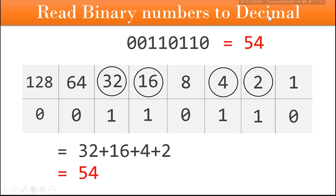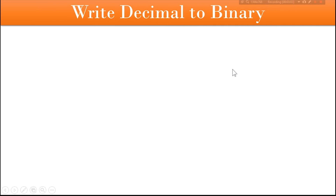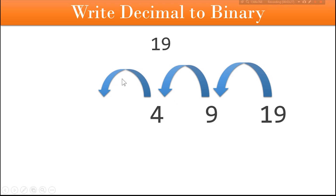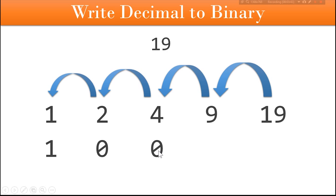Now let's look the other way around: decimal to binary. Suppose someone gave you the number 19 and you want to convert it to binary. Write 19, divide by 2 — you get 9 remainder 1, ignore the remainder. Divide 9 by 2 — you get 4 remainder 1. Divide 4 by 2 — you get 2, then 1. When you reach 1, stop. Now wherever there is an odd number put 1, wherever there is an even number put 0. So 4 is even — put 0; 9 is odd — put 1; 19 is odd — put 1. You get the binary number 10011.